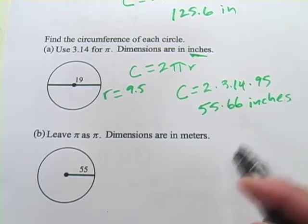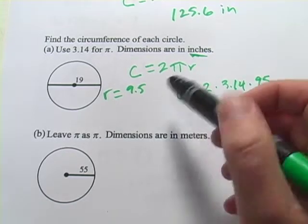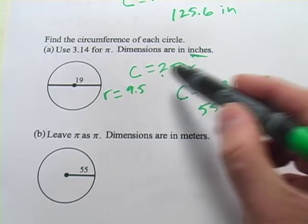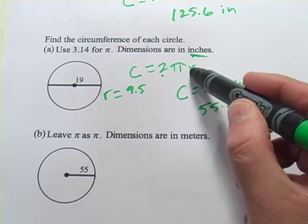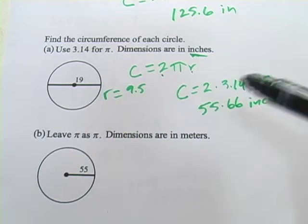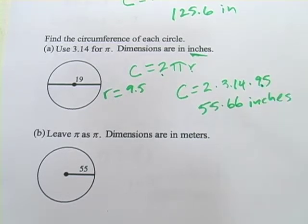You actually could have saved yourself a step if you wanted to, because 2 times r times π, it doesn't matter what order you do these in. 2 times π, 2 times r is the diameter. So this is the same as 19 times π. That should have been 9.5.